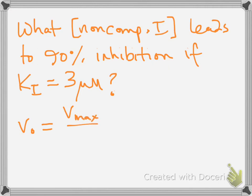...is equal to Vmax over alpha times S over Km plus S. So this is the Michaelis-Menten equation altered to fit non-competitive inhibition.